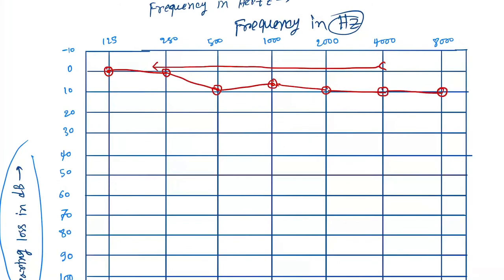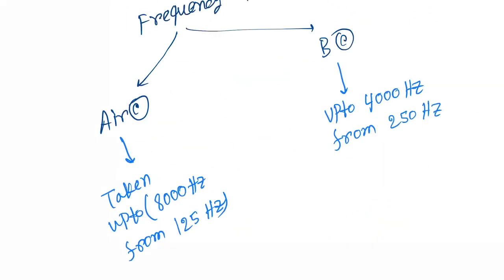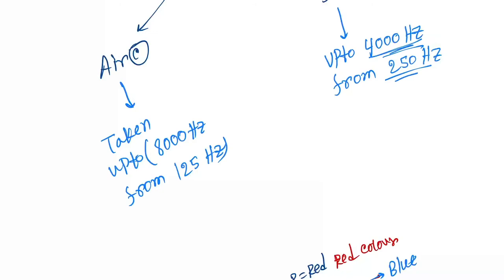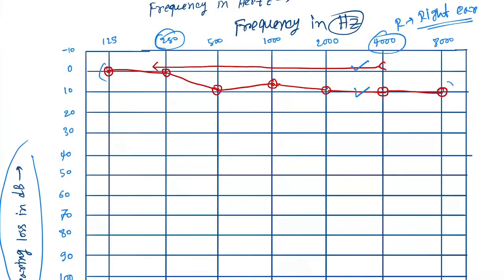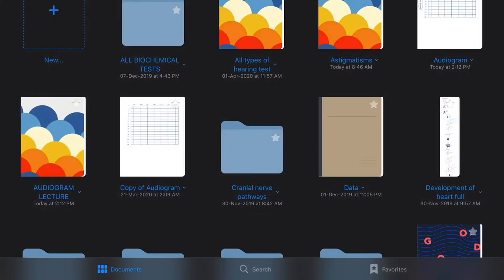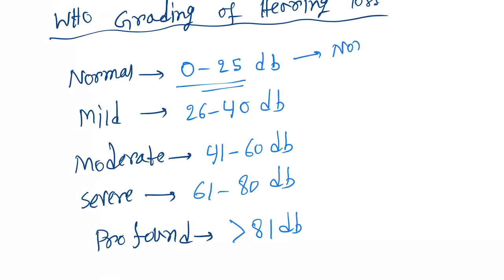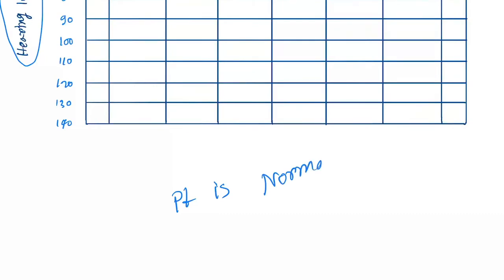Now let's discuss clinical cases. This first audiogram is done in red, meaning it is for the right ear. The bone conduction is taken from 250 to 4,000 Hertz, and the air conduction from 125 to 8,000 Hertz. Both are from 0 to 10 decibels. According to WHO grading, 0 to 25 is normal, so this patient has no hearing loss.